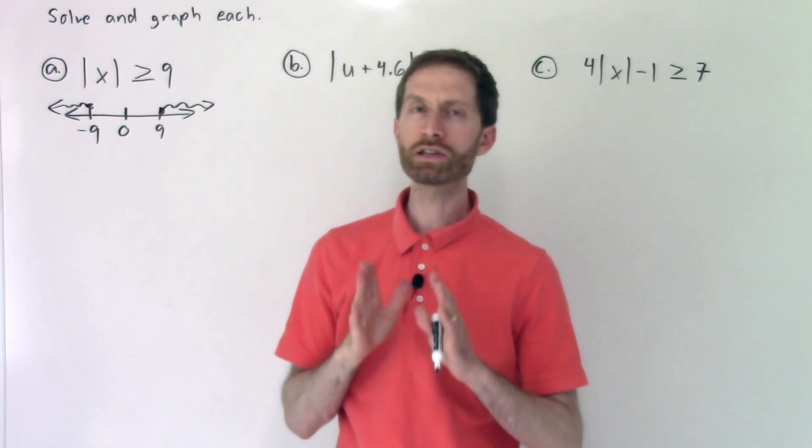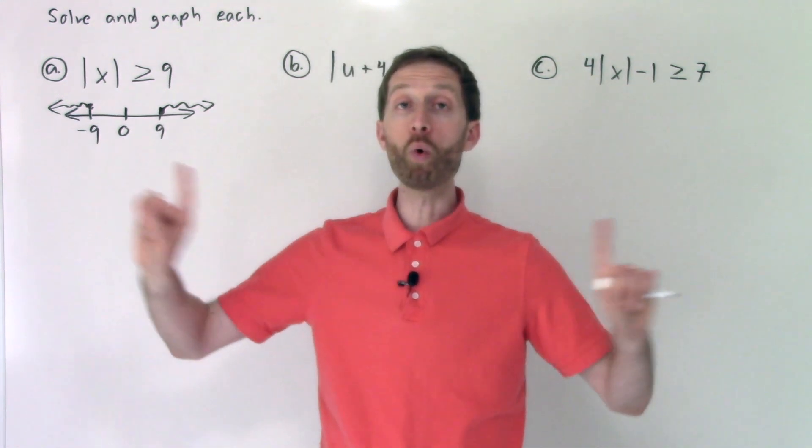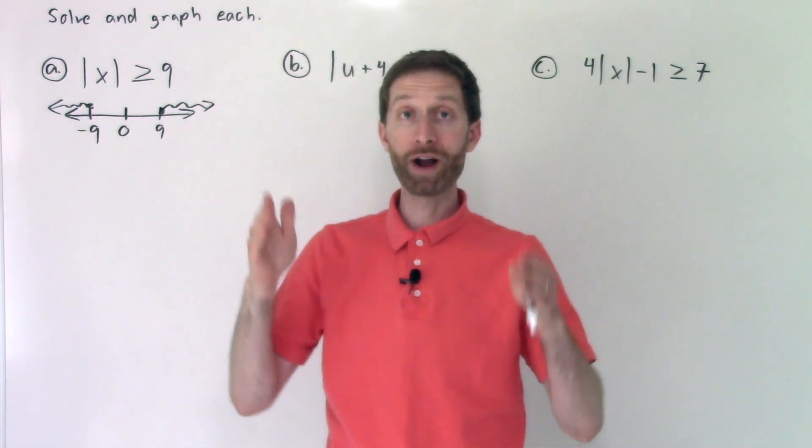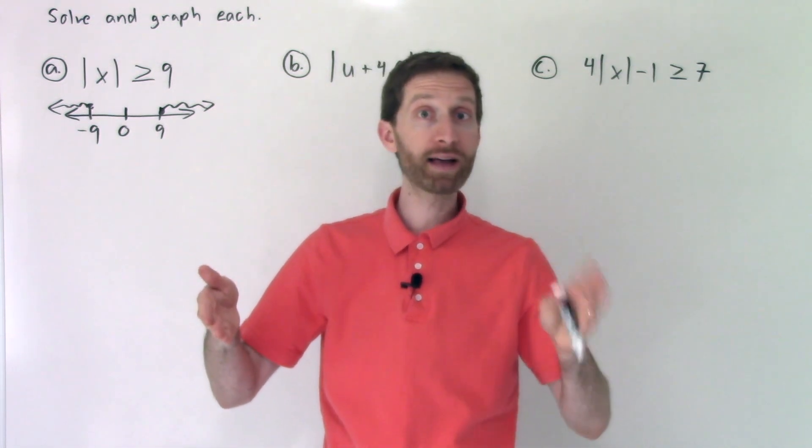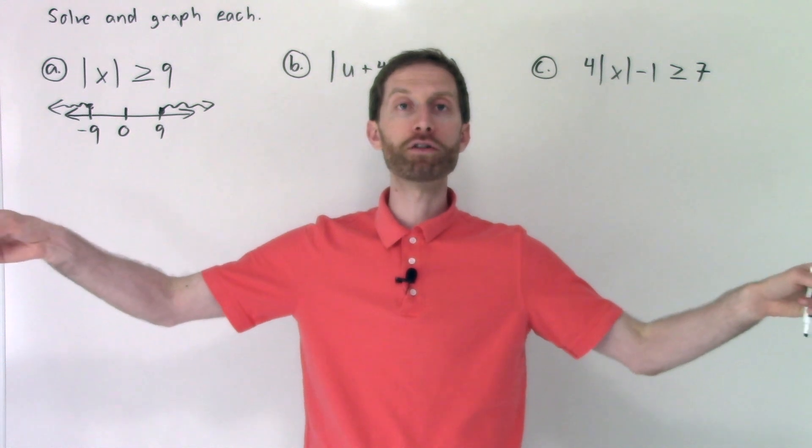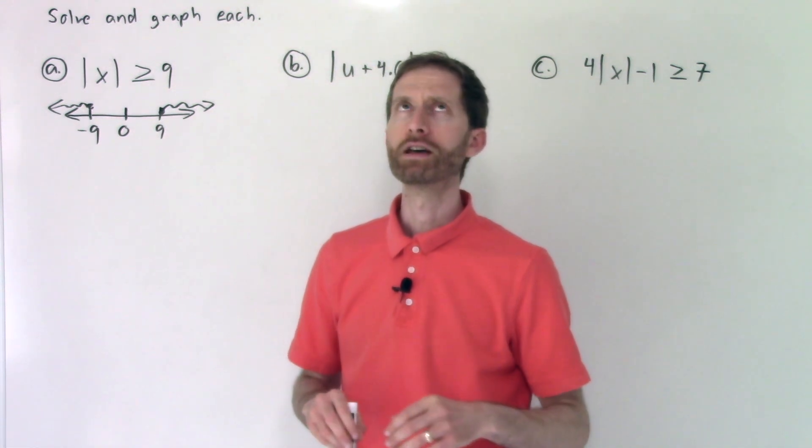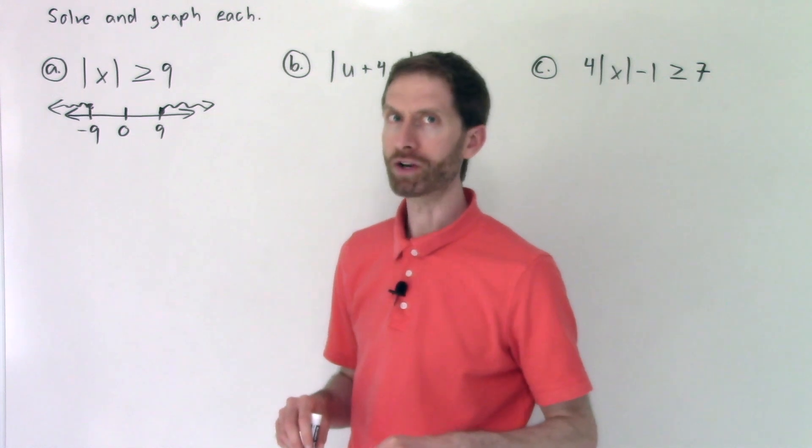If we're a distance from zero of nine or more, that means that we're at either negative nine or positive nine and then extending out farther from zero in either direction. That's an or inequality.